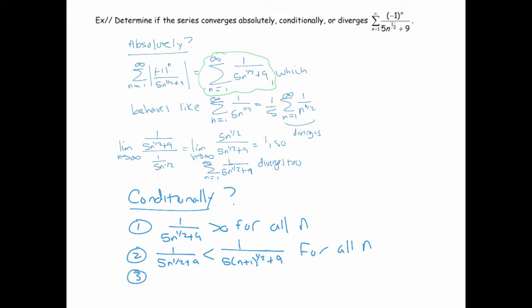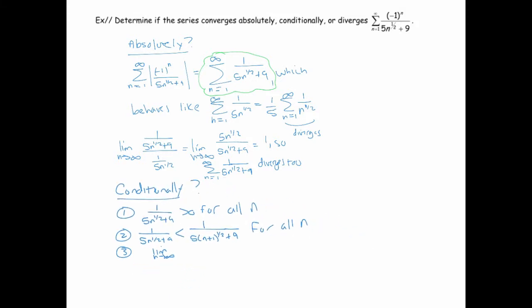And then we need the limit as n goes to infinity to be 0. As n goes to infinity, that clearly goes to 0. So it passed the alternating series test, which means it converges conditionally.